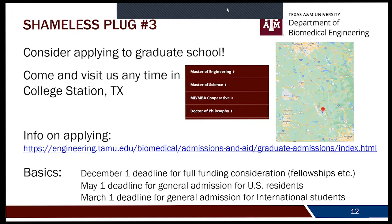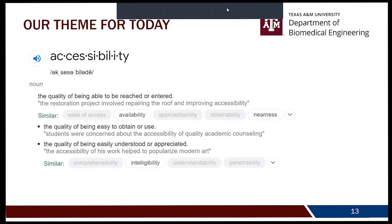For general admission — if you decide you don't have a job and want to apply to graduate school — the deadline is May 1st, and March 1st for international students. Visit our website to find out whether you're compatible with any of the faculty members or lab groups. That was shameless plug number three. Let's move on to what we're actually talking about today: accessibility.